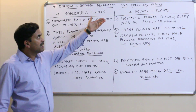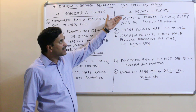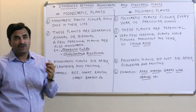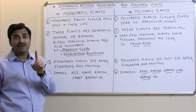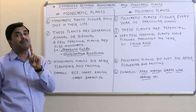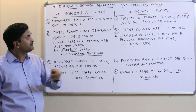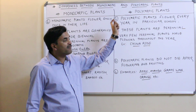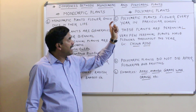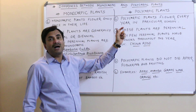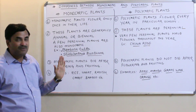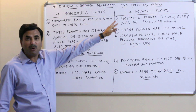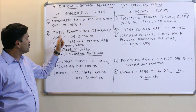Polycarpic plants are plants which flower every year in a particular season. So 'poly' means many — polycarpic plants flower every year but in a particular season. So now you should be able to differentiate between monocarpic and polycarpic plants.